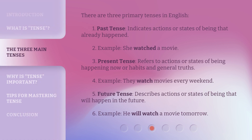There are three primary tenses in English. First, past tense indicates actions or states of being that already happened. Example: she watched a movie. Second, present tense refers to actions or states of being happening now, or habits and general truths. Example: they watch movies every weekend. Third, future tense describes actions or states of being that will happen in the future. Example: he will watch a movie tomorrow.